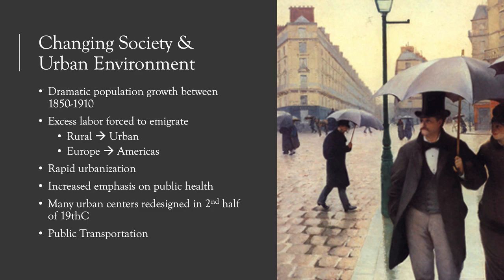Improved nutrition due to agricultural productivity and the process of pasteurization made food safer and more available, so people had a better diet. The number of children in each family started to decrease, though this trend was more pronounced in the middle class. Due to this dramatic population increase, there was a lot of excess labor in various parts of Europe that was forced to immigrate. One of the most common forms of migration was from rural to urban areas, with significant migration to cities from the countryside, although migrants often maintained a connection to their rural areas through language or culture.